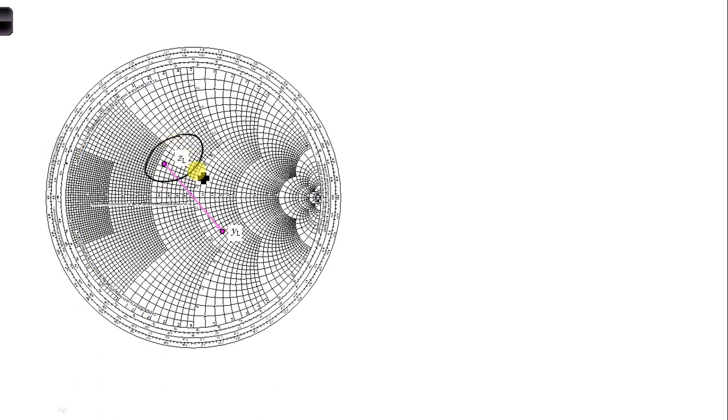So take ZL, draw a straight line from ZL through the center of the Smith chart, and make sure this distance here to the center is the same distance out to here, and then we can label this as YL, the admittance.